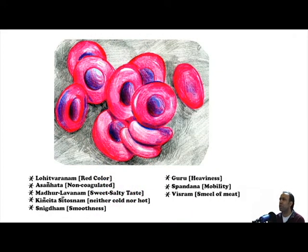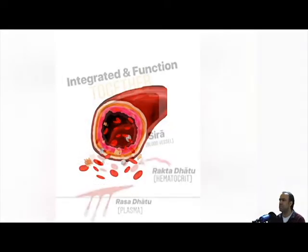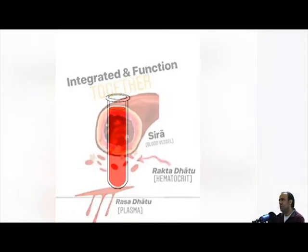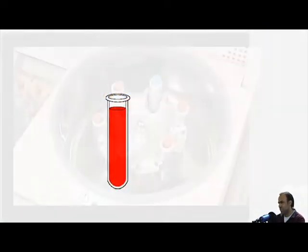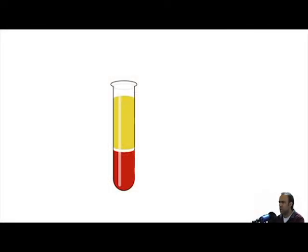Today we're going to focus on Raktadatu, that which most closely resembles the hematocrit portion of blood. We can say that Rasa and Raktadatu are integrated and function together. To make a better distinction between Rasa and Raktadatu, if we were to obtain a blood sample and spin it down, blood would separate into fractions based upon particle size, density, and specific gravity.